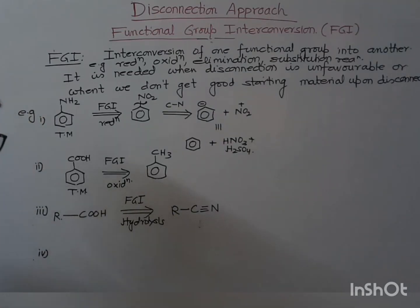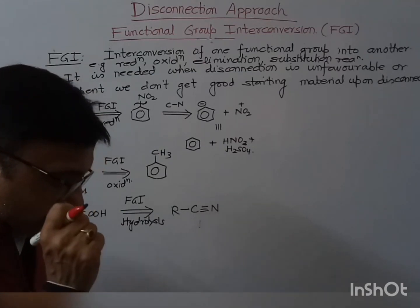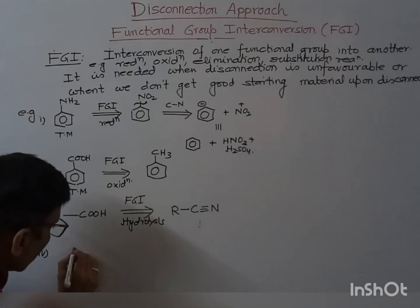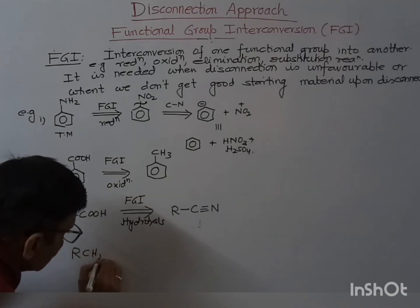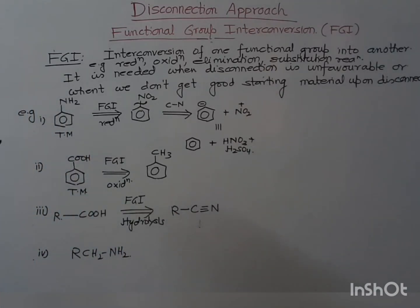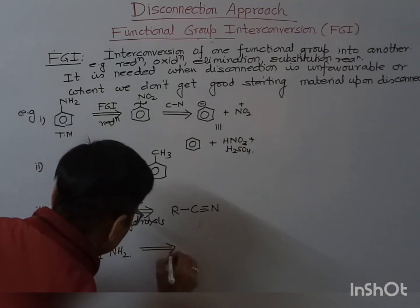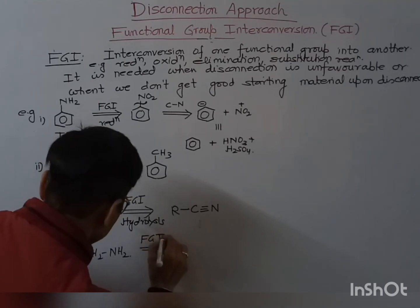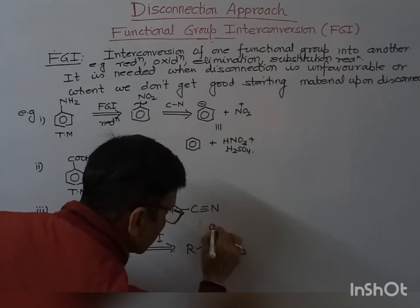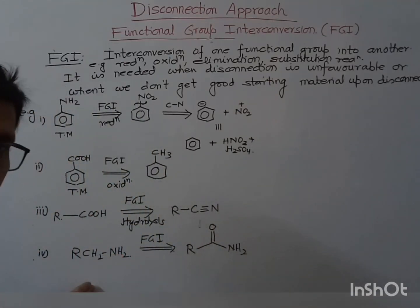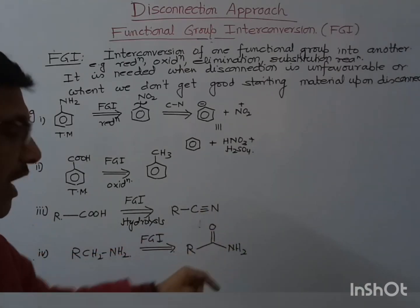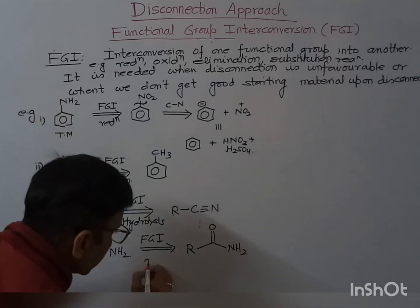Fourth example: suppose if you have an amine — RCH2NH2. This amine can be converted into an amide. If you think in reverse direction, how can we get the amine from this amide? By reduction of the carbonyl group, you will get the amine. So by reduction, you can write this.